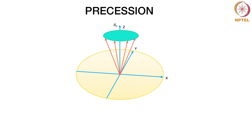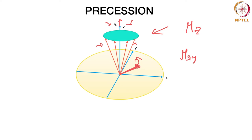There is a B0 field along the Z-axis. The individual magnetic spins are precessing around the direction of the magnetic field. If you think about it, you can do a vector sum and have one arrow precessing. There will be a component along Z and an in-plane component in the XY plane, which is also precessing. There is an Mz component along the Z direction and an Mxy component in the plane.